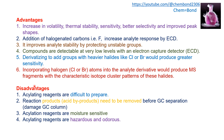Disadvantages of acylation include that these compounds are difficult to prepare. The reaction product — usually an acid — needs to be removed before analysis because it can damage the GC column. The reagents are moisture sensitive, so the medium must be moisture-free. These reagents are also hazardous and have strong odors.